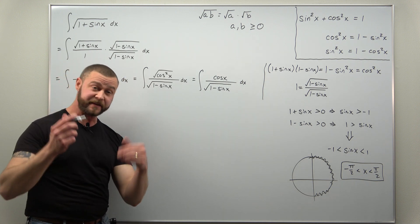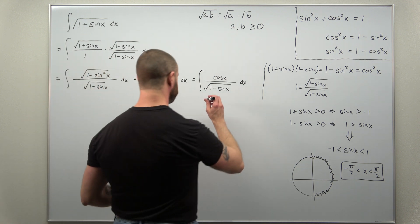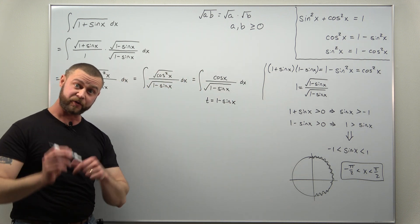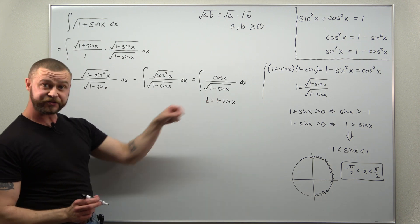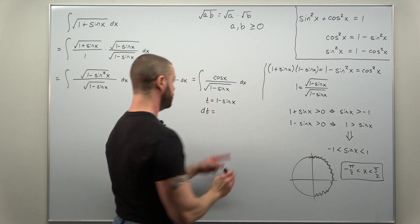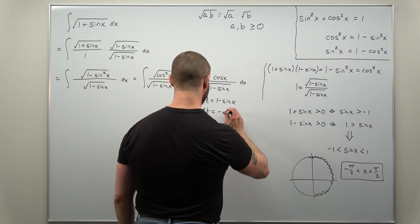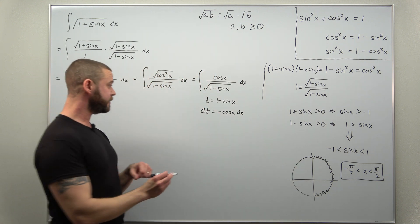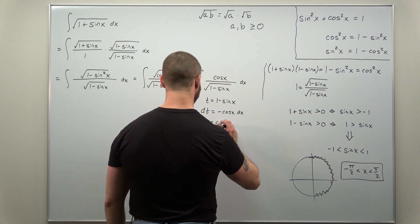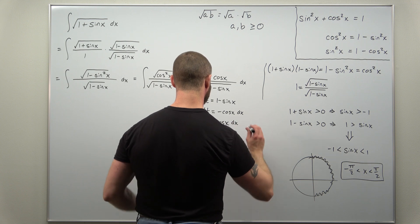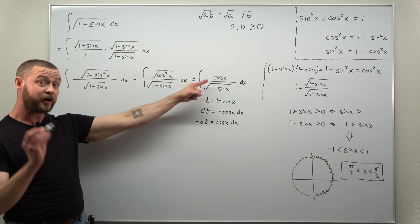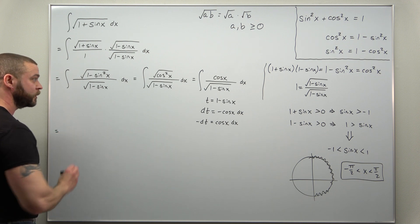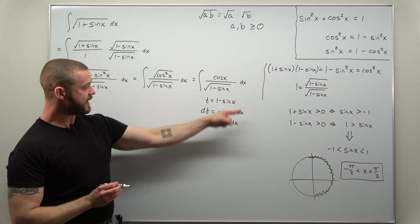Let's try the obvious substitution: let t equal one minus sine of x. The derivative of that — the derivative of sine is cosine, just be careful with the minus sign — gives dt equals negative cosine of x dx. We'll bring the factor of negative one to the other side and write that as negative dt equals cosine of x dx. So if we go ahead and rewrite our integral in x as an integral in t, we have a negative cosine of x dx, which becomes negative dt.